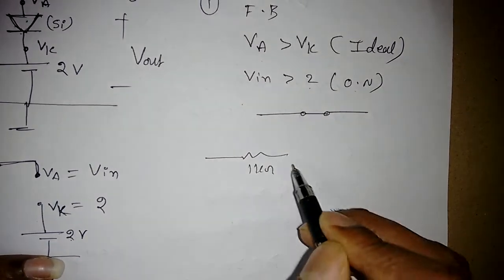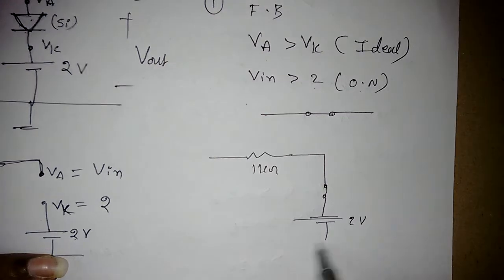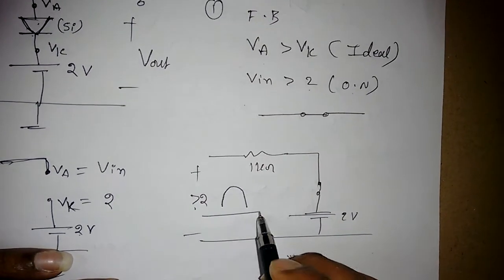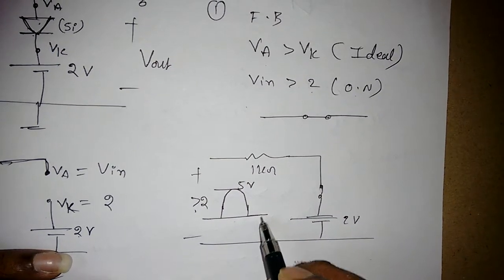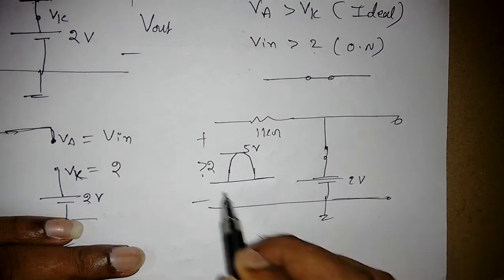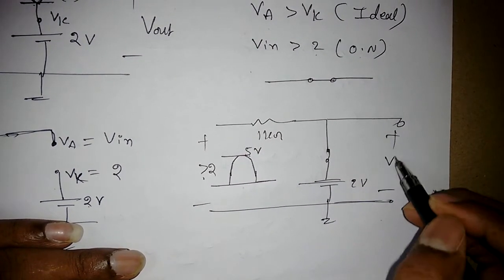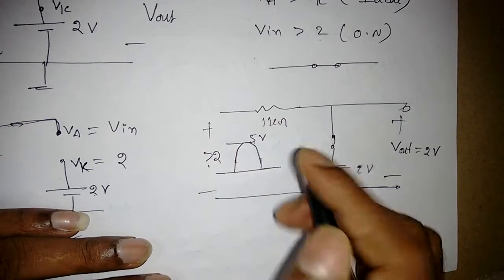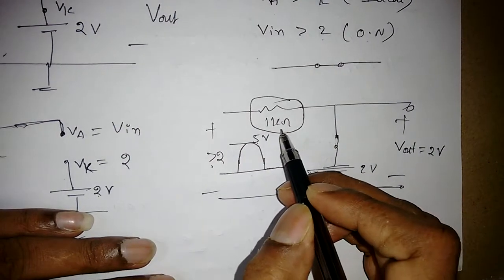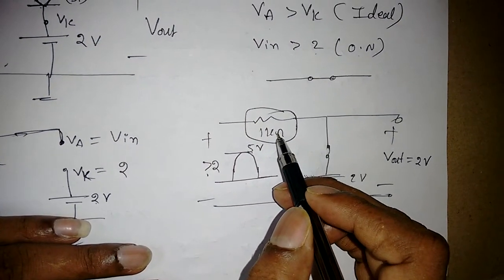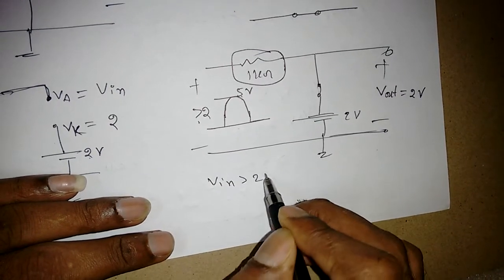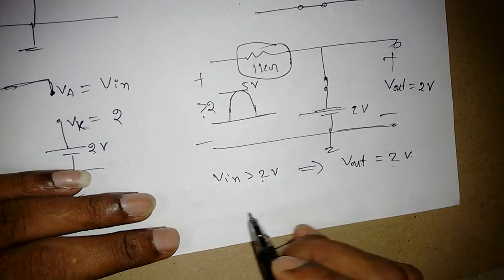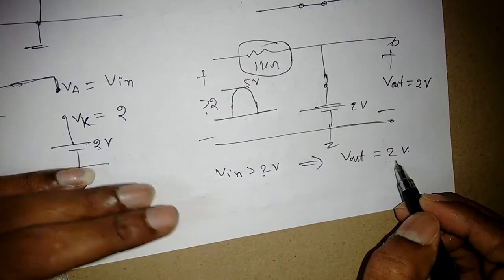When the diode is ON (short circuit), the circuit has the 1kΩ resistor and the diode shorted with the 2V source. Applying a positive half cycle greater than 2V — say 5V — even though more than 2V is applied at the input, the output Vout equals 2V only, because the diode is shorted in parallel with the 2V source. The remaining voltage is dropped across the 1kΩ resistor. So whenever Vin is greater than 2V, the output is clamped at 2V regardless of whether Vin is 3V or 5V.